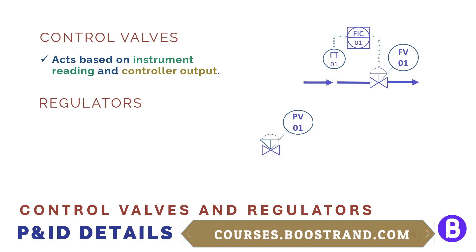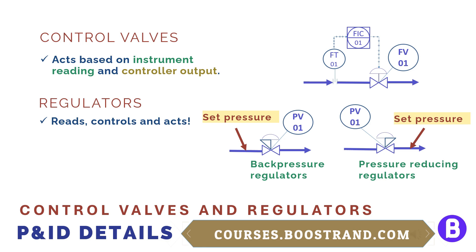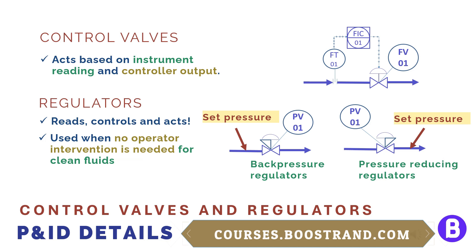We can also use self-regulating valves, which are called PCV. Here we can control the parameter locally from the valve itself — the valve senses the pressure and adjusts its opening. These can be either pressure reducing regulators, which control the downstream pressure, or back pressure regulators. They can only be used in clean fluids and only in applications that need no operator intervention, such as reducing the instrument supply pressure or gas blanketing in vessels or storage tanks.